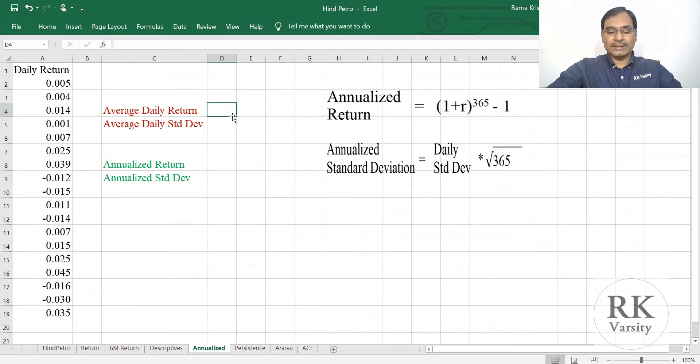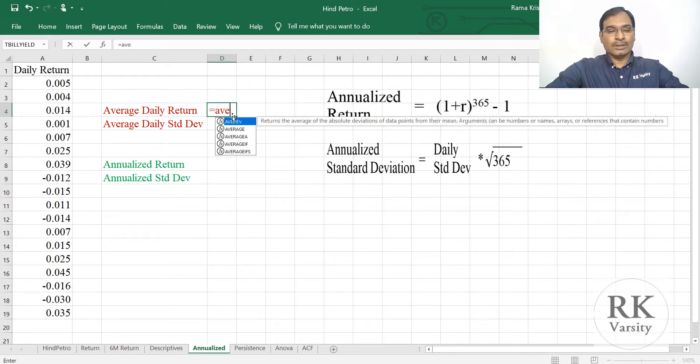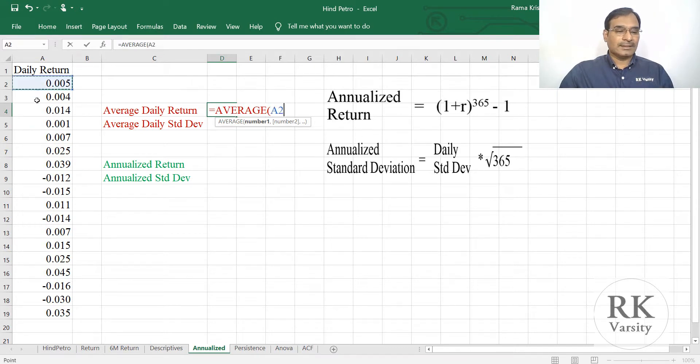So your average daily return is equal to average. Then select the return series, close the bracket, press enter key. So your average daily return is 0.008.